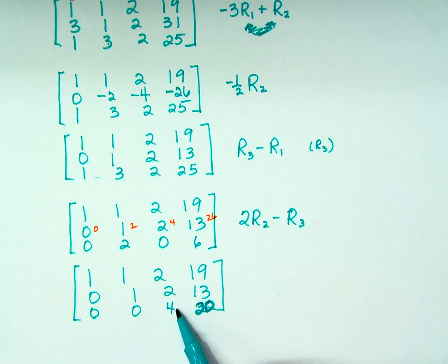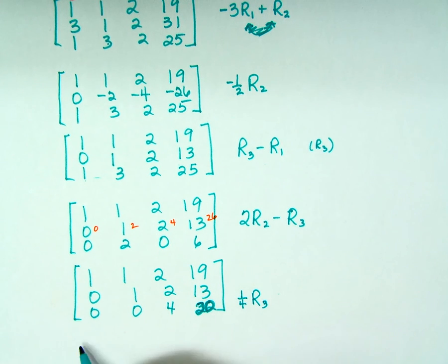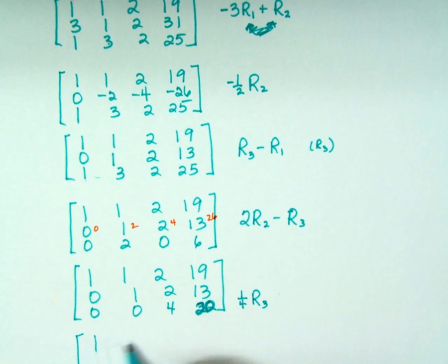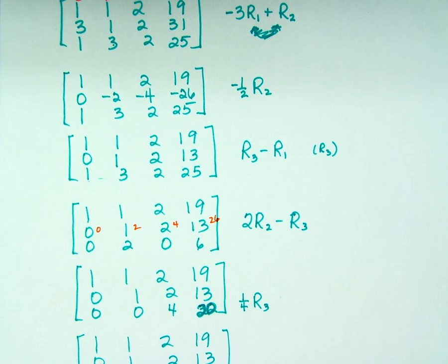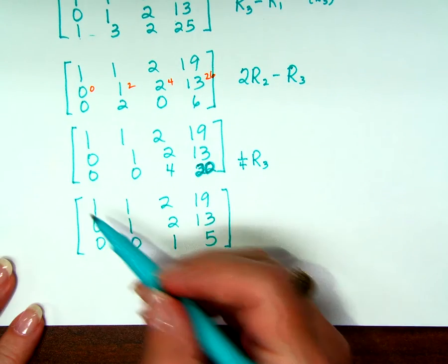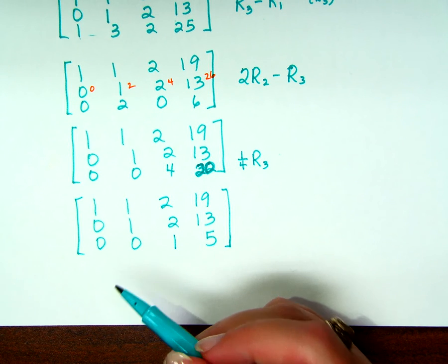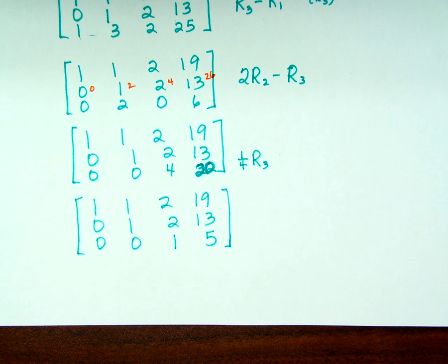4. They're both divisible by 4, so let's multiply the bottom row by 1 fourth. 1, 1, 2, 19, 0, 1, 2, 13, 0, 0, 1, 5. Oops, sorry. I got my diagonal of 1's and I got my triangle of 0's. That is Gaussian elimination. That's the Gaussian form.